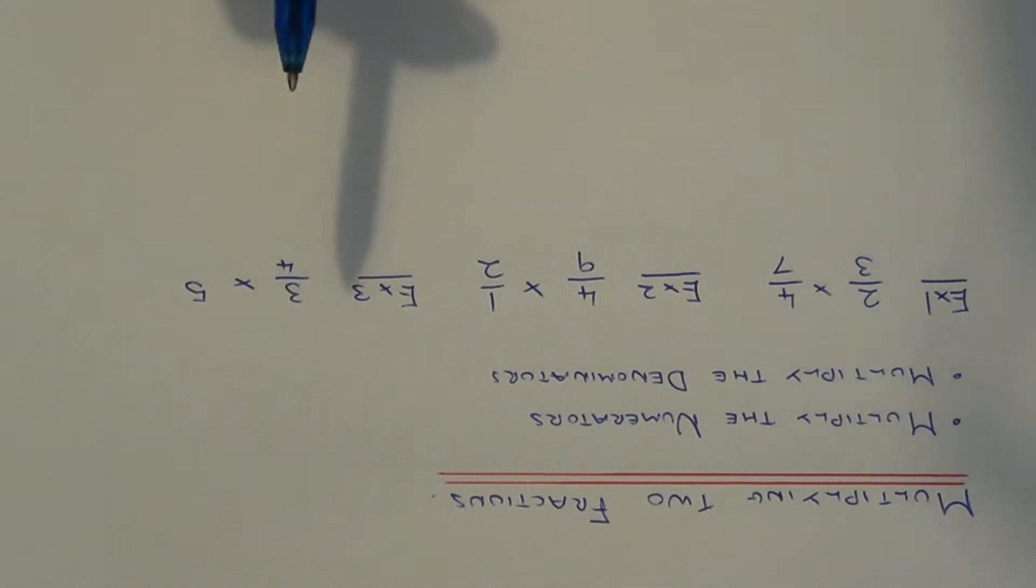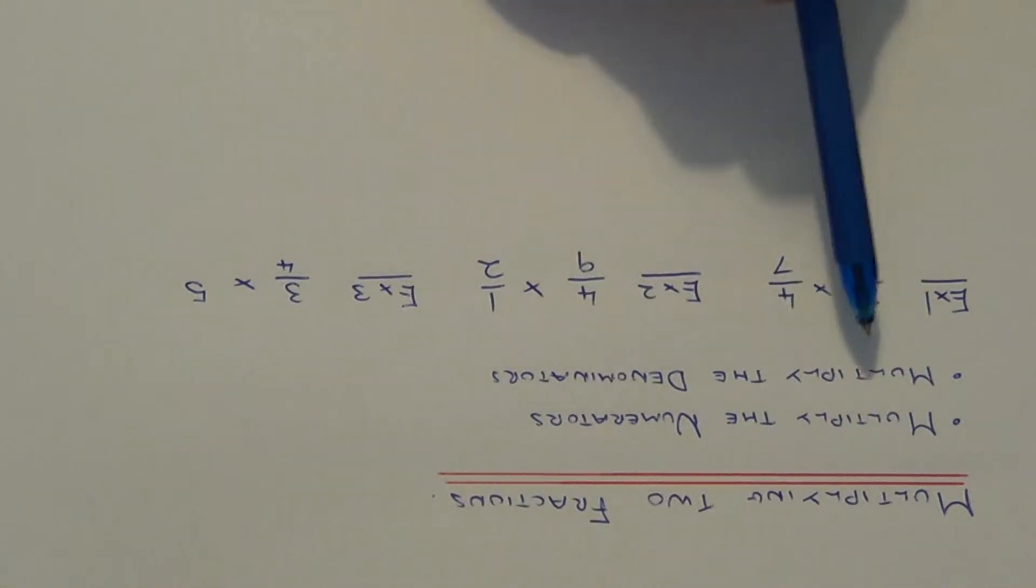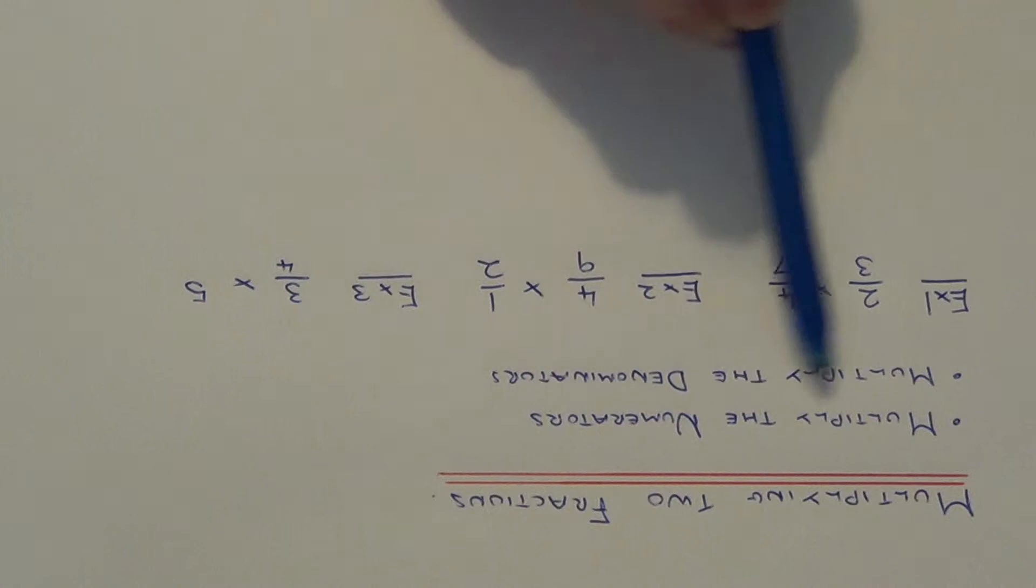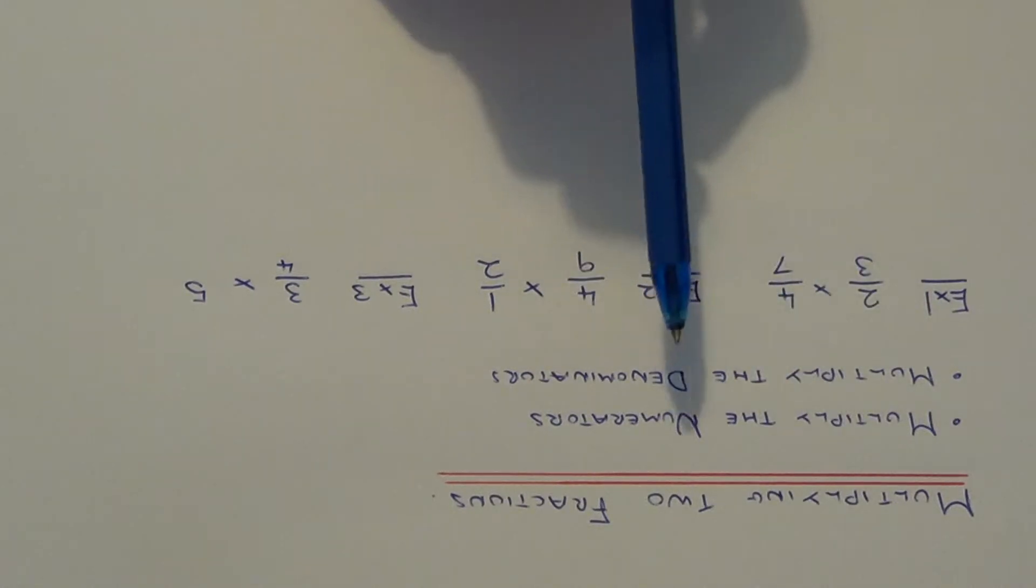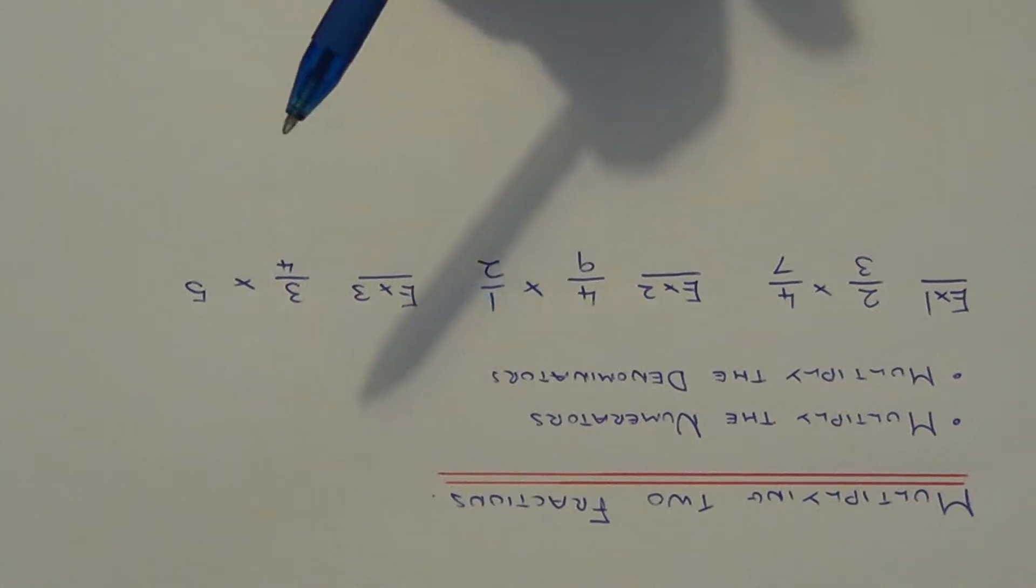Multiplying fractions is much easier than adding and taking away fractions because you don't have to make the denominators the same. It's really easy to do because you just multiply the numerators, that's the top numbers, and then multiply the denominators. Once you've done that, just check to see if you can simplify your final fraction.